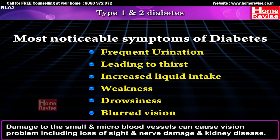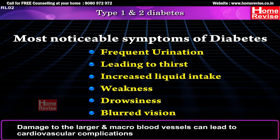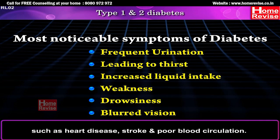Damage to the small and micro blood vessels can cause vision problems including loss of sight, nerve damage, and kidney disease. Damage to the larger and macro blood vessels can lead to cardiovascular complications such as heart disease, stroke, and poor blood circulation.